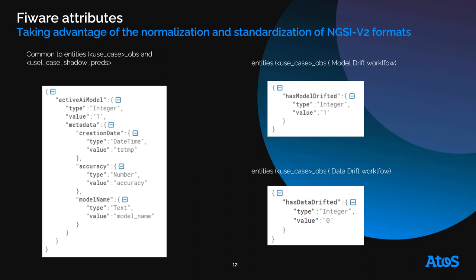To illustrate all this, let's see how we chose properties and attributes that define the observation and prediction entities. You can find an active model property to know if there is an active model associated with a disabled parking space. We added metadata such as date created, accuracy score, and model name. For pipelines supervising model drift or model input data, we created properties to indicate whether drift occurred on that model.